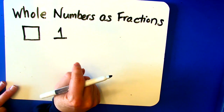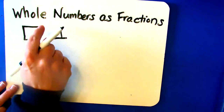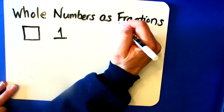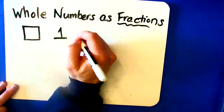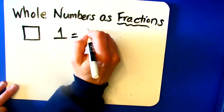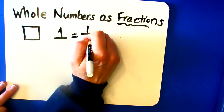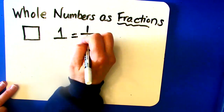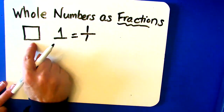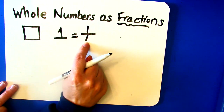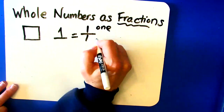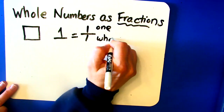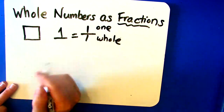Mrs. D wants to teach you that you can represent any whole number as a fraction. So whole numbers have fraction names too. This is how you do it. To represent a whole number, you write the whole and you make one the denominator. When you see the one on the bottom as the denominator, you say 'whole.' This means one whole.